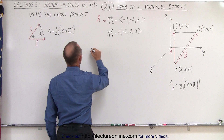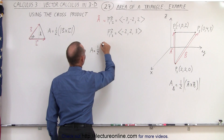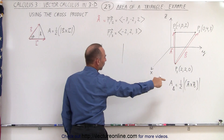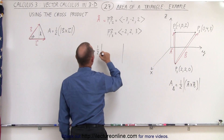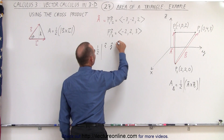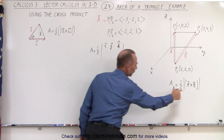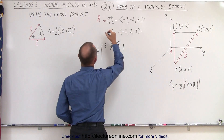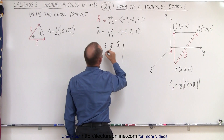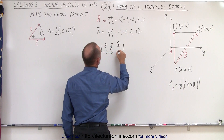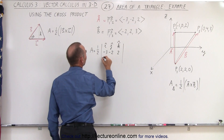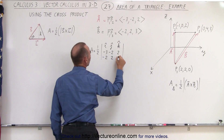The area is therefore equal to one-half times the magnitude of A cross B. So we have one-half, and we set up the determinant with I, J, K. The components of vector A are negative three, negative two, and two. The components of vector B are negative two, two, and three.